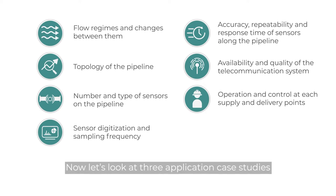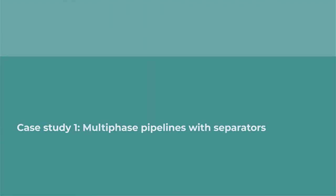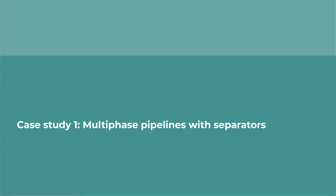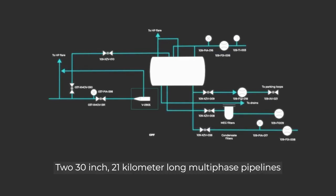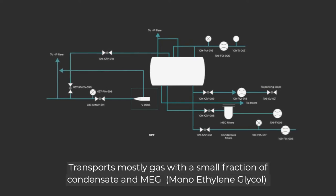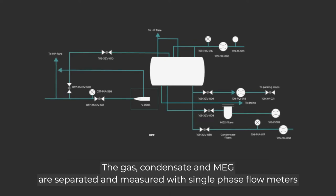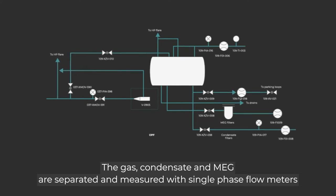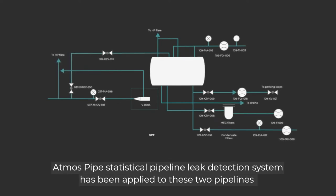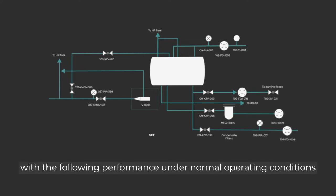Case Study 1: Multi-Phase Pipelines with Separators. Two 30-inch, 21-kilometer long multi-phase pipelines transport mostly gas with a small fraction of condensate and MEG, monoethylene glycol. The gas, condensate, and MEG are separated and measured with single-phase flow meters. Atmos Pipe statistical pipeline leak detection system has been applied to these two pipelines with the following performance under normal operating conditions.